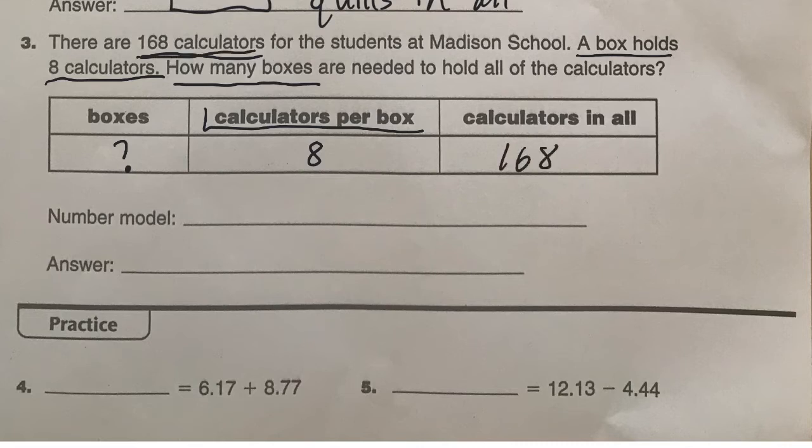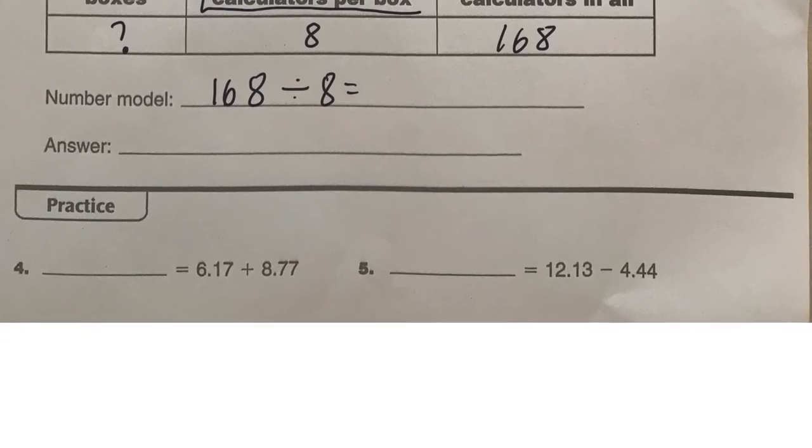And again, this is going to be a division. And this one, you may have a method you use to figure it out. In my class, we've been working on rectangles to solve this. So I'm going to use that method, which you may not have seen before. So we have 168 divided by 8, which means we're going to have a rectangle with an area of 168. And one of the sides is going to be 8.